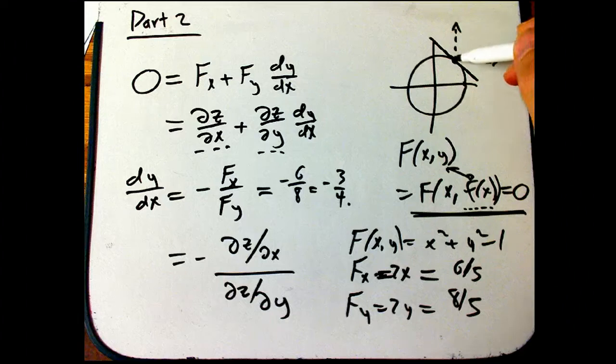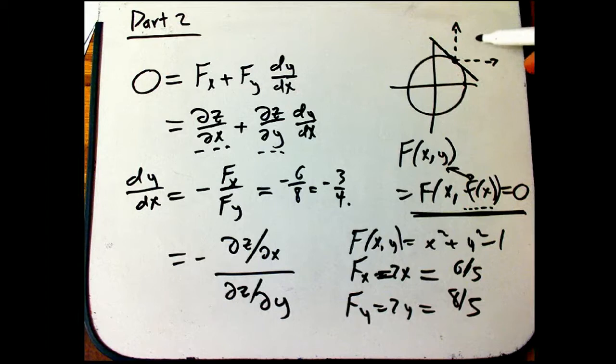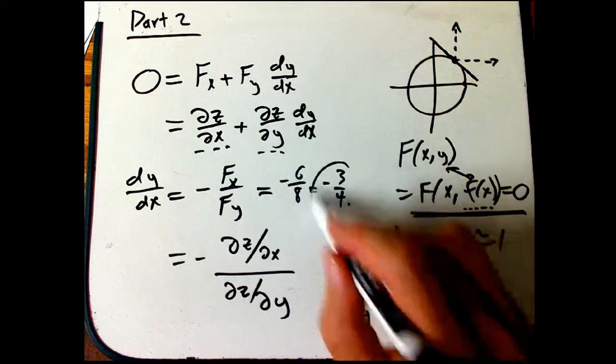So I'd better not go both in the x direction and the y direction positively, because that would give me certainly a non-zero rate of change. So I say, ooh, let's go with a negative slope.